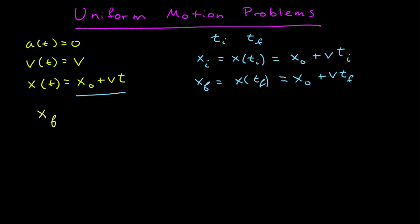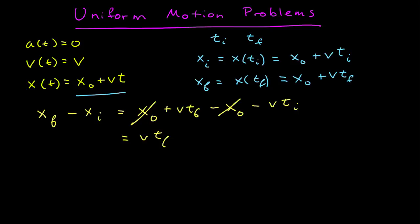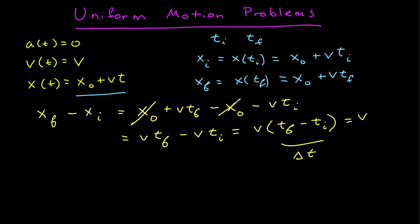To find a relationship, let's take the difference between the final position and the initial position. The final position is x naught plus the velocity times the final time, minus x naught minus the velocity times the initial time. The x naught terms cancel, and we have velocity times final time minus velocity times initial time. I can factor out the velocity, and I get velocity times (t final minus t initial), which we've called delta t — the time interval — so v delta t.